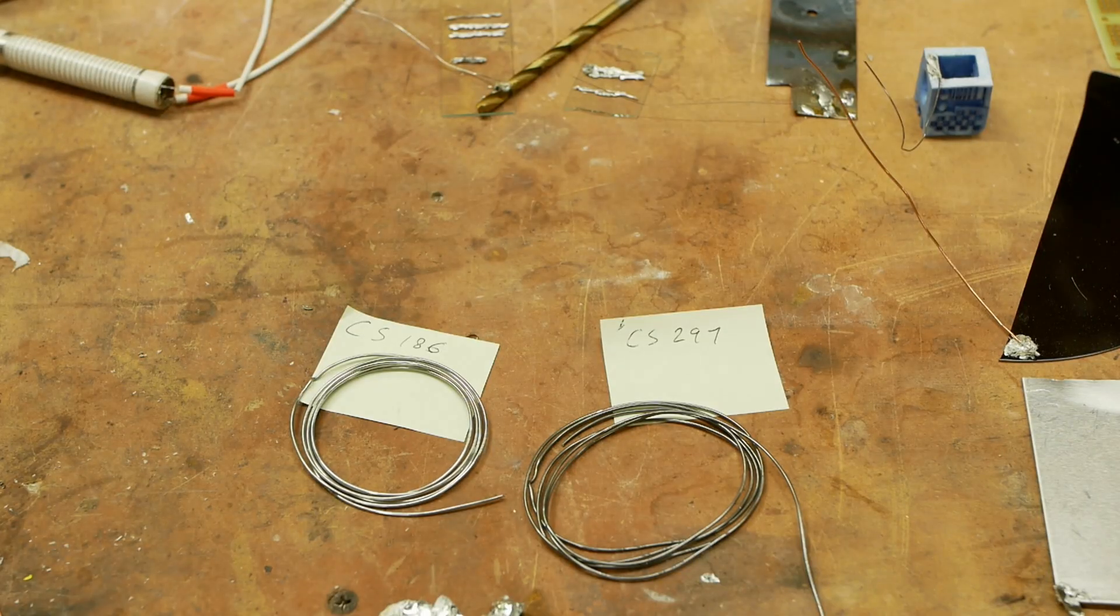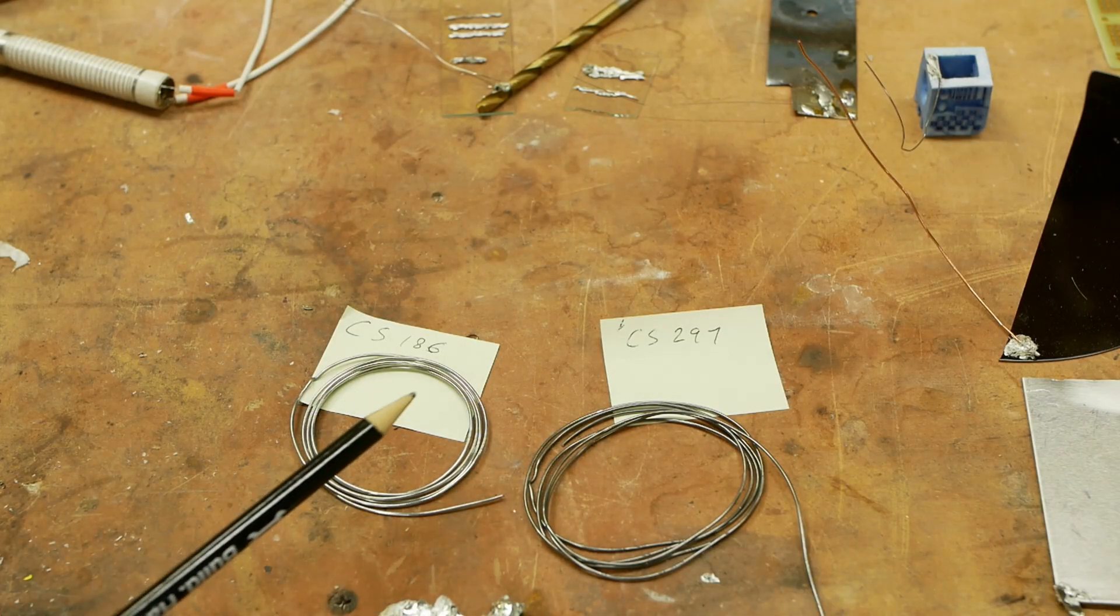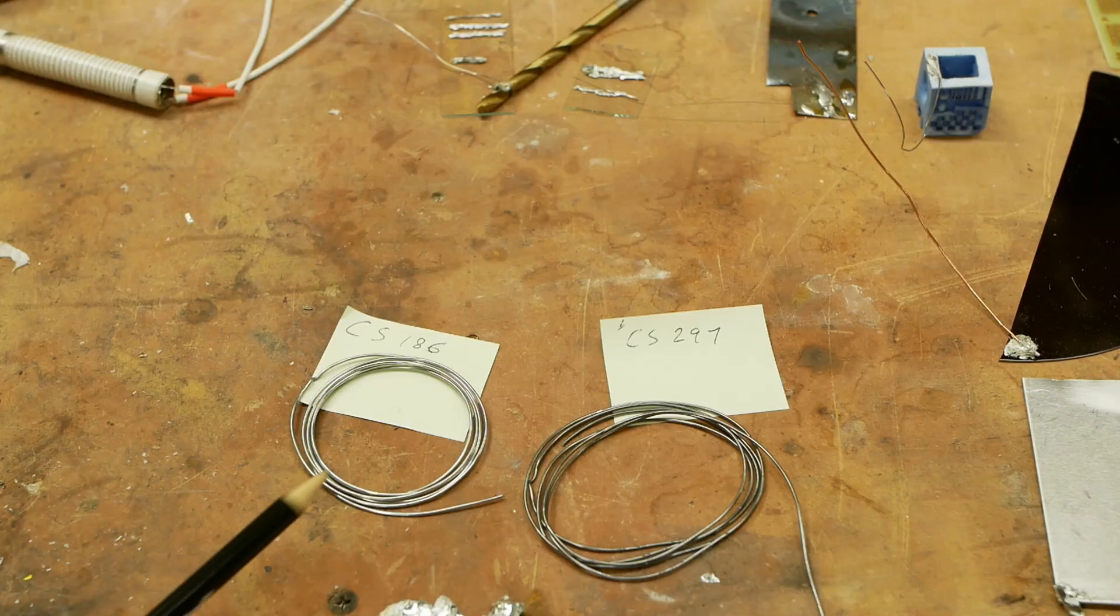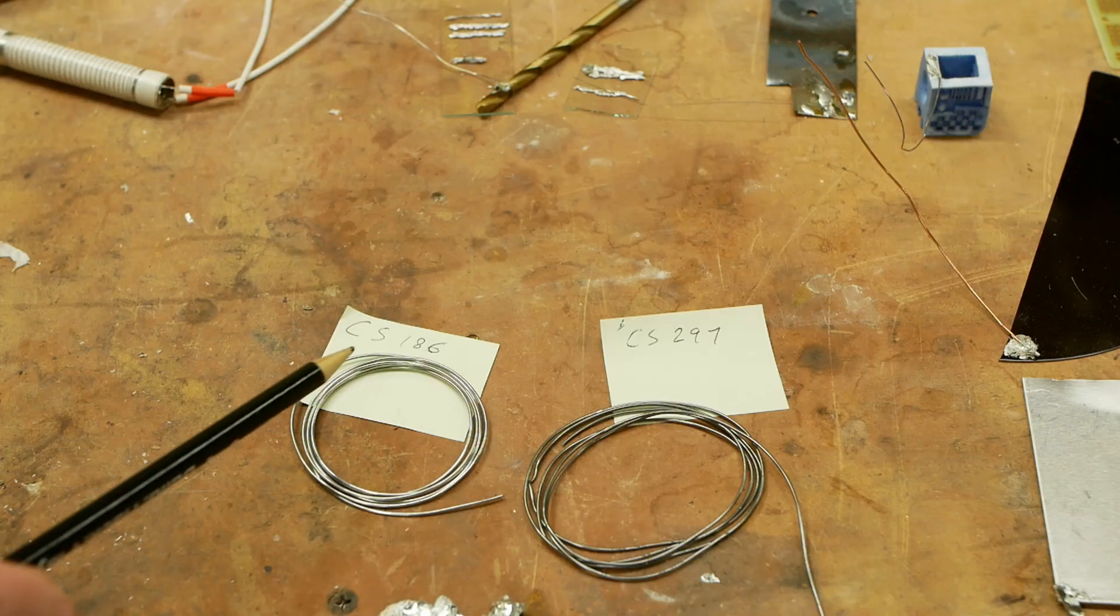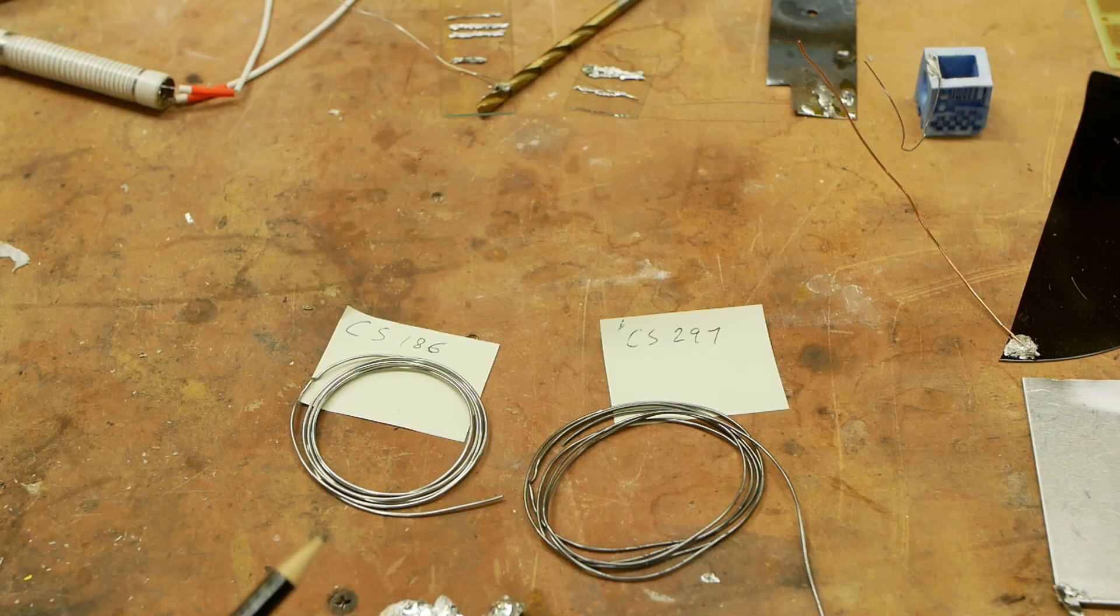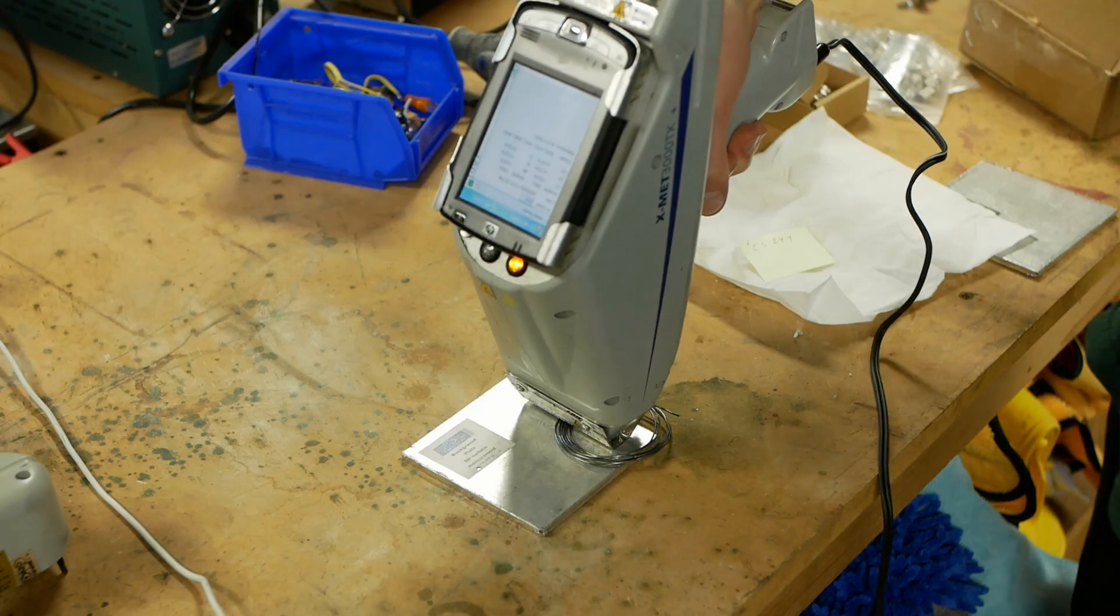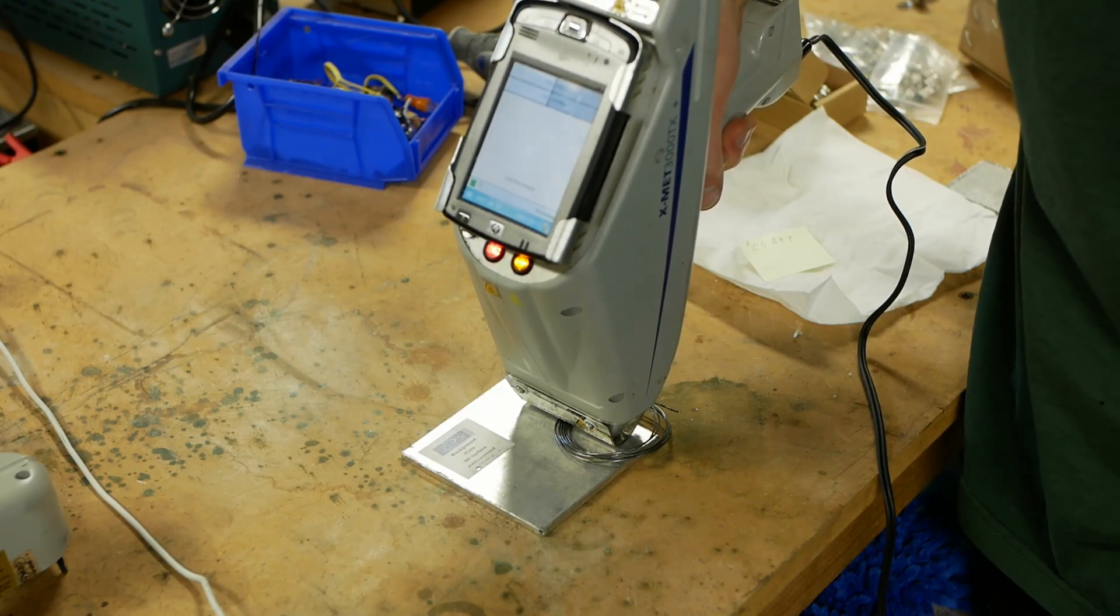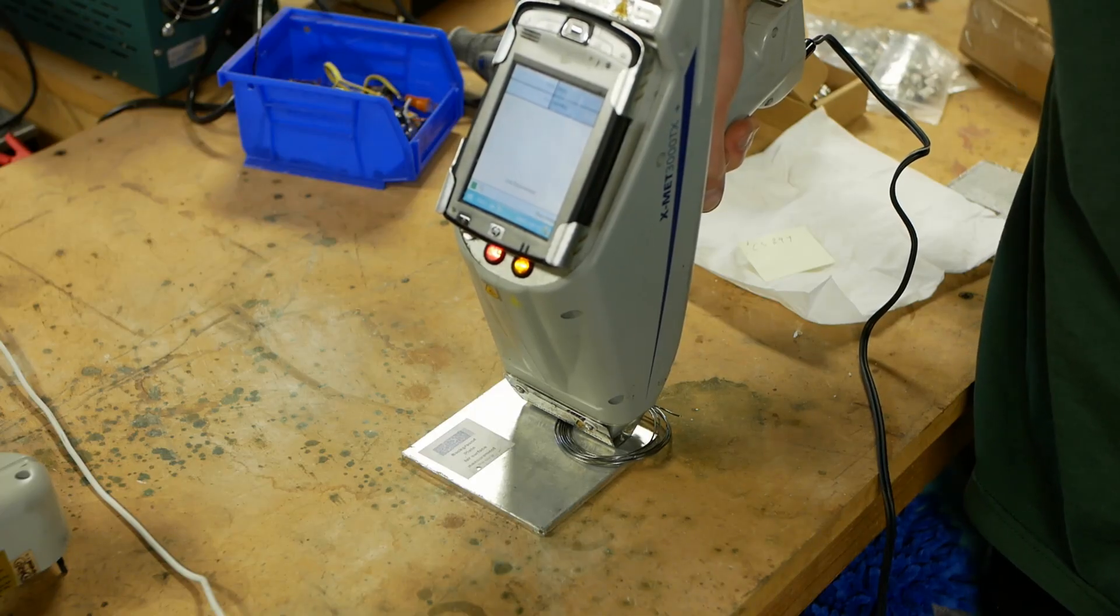Later in my adventures I was able to get a couple samples of commercially made active solder. So these are Soda Solzer 186 and 297. And these are actually leaded alloys. And I put these under the XRF gun to determine what was inside there.